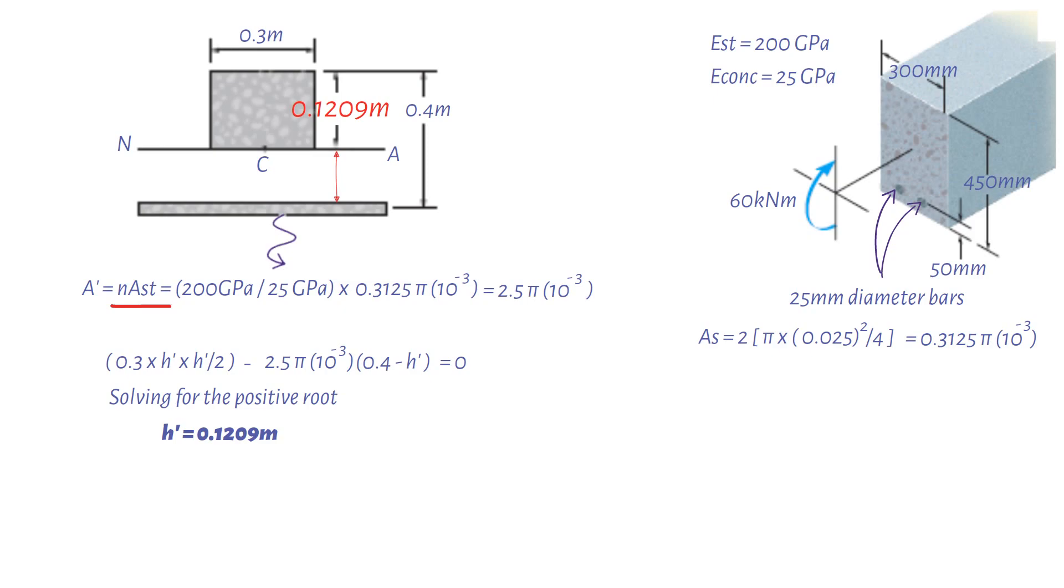Using this value for h dash, the moment of inertia of the transformed section about the neutral axis is 1 divided by 12 times 0.3 meters times 0.1209 meters to 3, plus 0.3 times 0.1209 times 0.1209 squared, plus 2.5 pi times 10 to the power of minus 3 times 0.2791 squared. This gives us a value of 788.52 times 10 to minus 6 meters to 4.